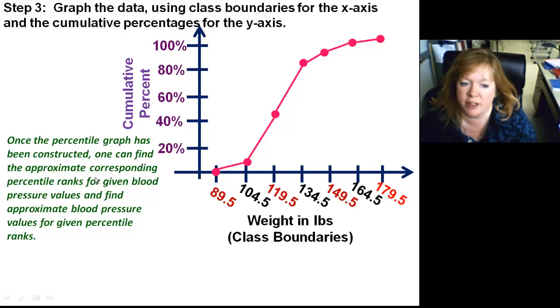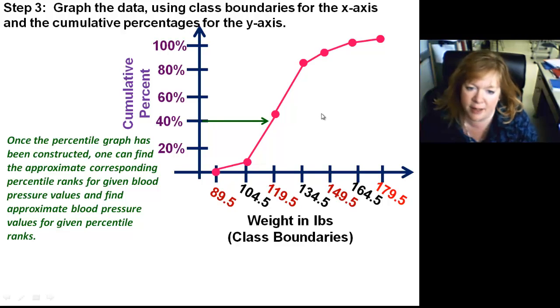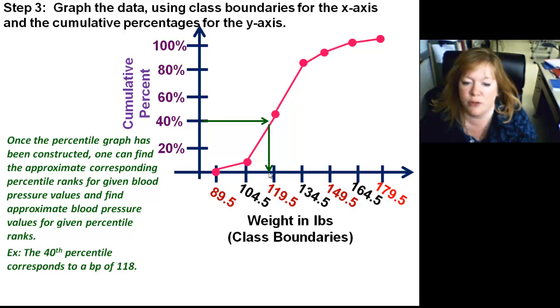Once it's constructed, you can find approximate corresponding percentile ranks for your blood pressure values or whatever you have. So I can say, for example, to be in the 40th percentile with my blood pressure, which means that my blood pressure is higher than 40% of the people, I would go over and down and look at what X value corresponded with that. So in this case, the 40th percentile corresponds to approximately 118.